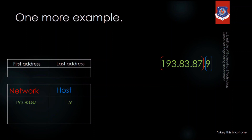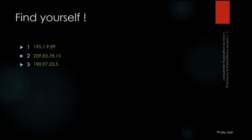The first address of this network is 193.83.87.0 — the network value is fixed but the host value is zero. The last address of the network is 193.83.87.255. If you increase one beyond the last address, the network ID changes. Now, there are examples for you to find by yourself: find the class, the network ID, and the host ID. That's it for today's session — if you have any doubts you can ask in the comment section, thank you.